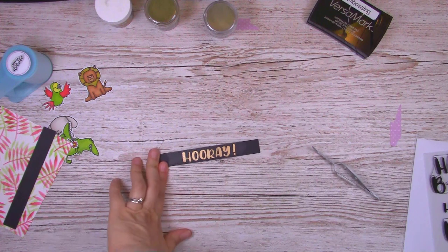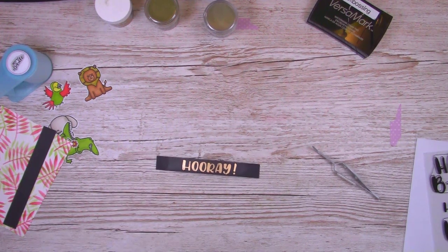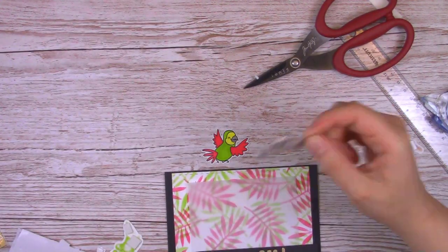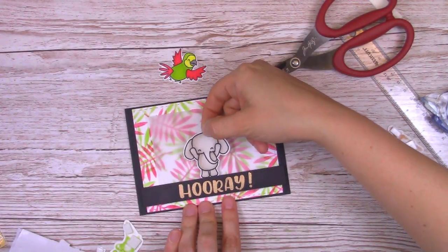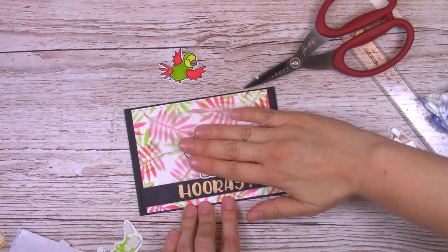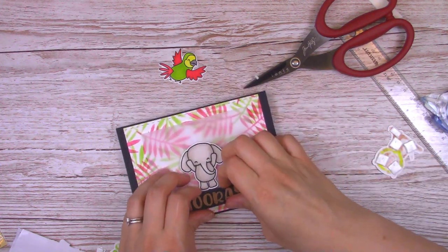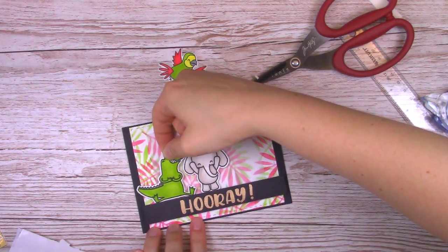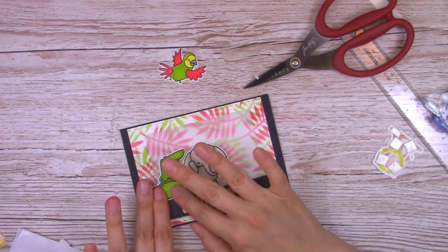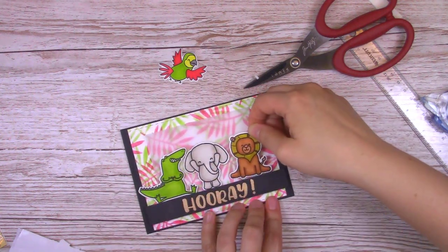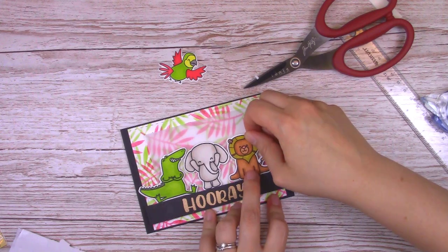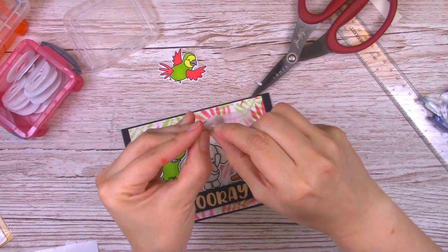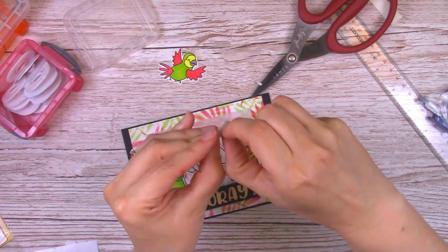So once I was done with that, again, off camera, just to save you guys a little bit of time, I adhered my front card panel, the one I stenciled onto, onto a black card base, and then on top of that I glued a smaller rectangle of vellum, and on top of that vellum, my hooray sentiment strip. I put some double-sided foam tape on the back of my images, and I placed them on top of that little sentiment carefully. I like the way it helped to ground my little scene.